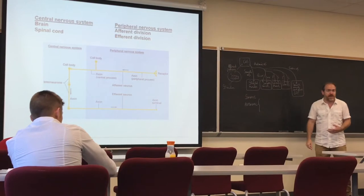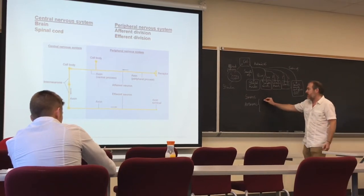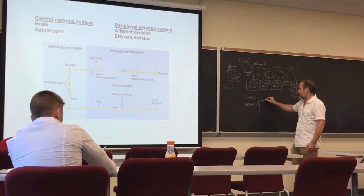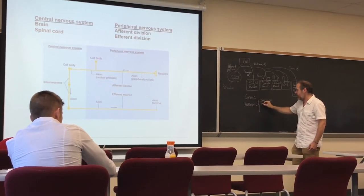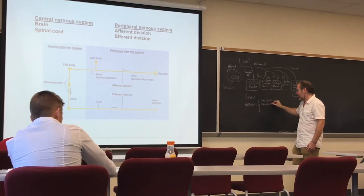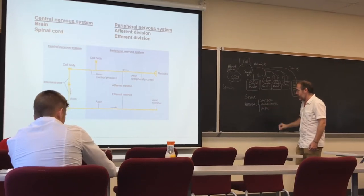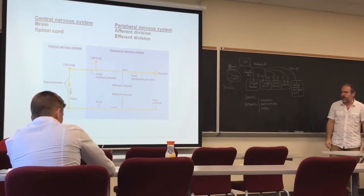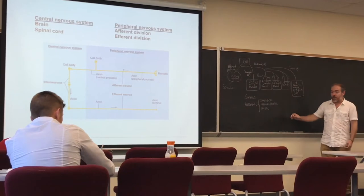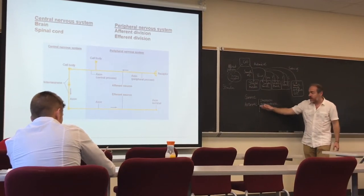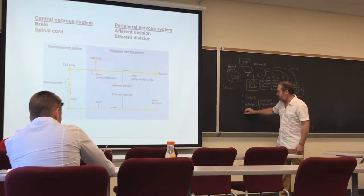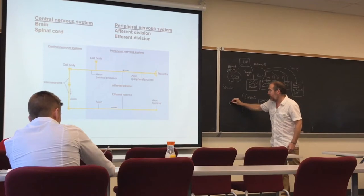There are three branches in the autonomic nervous system: sympathetic, parasympathetic, and enteric. All of those are the efferent pathway.